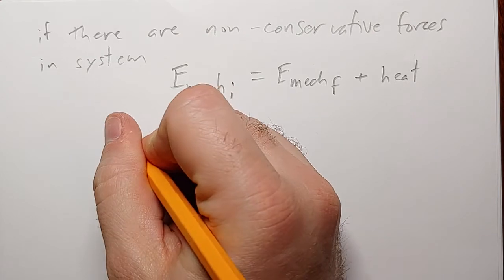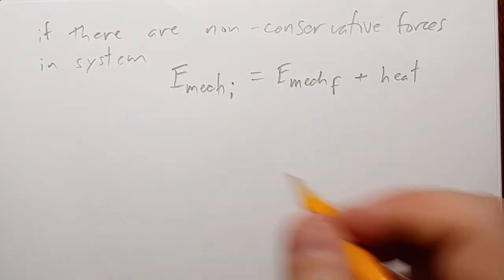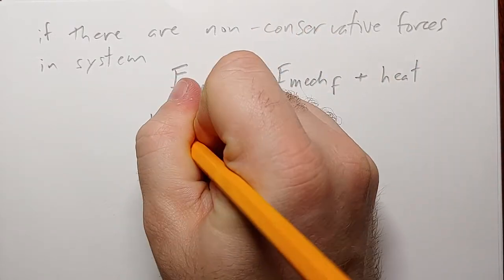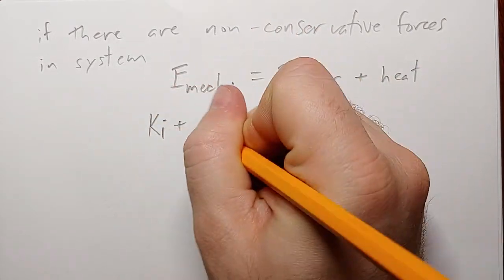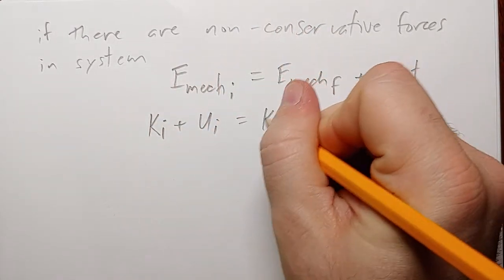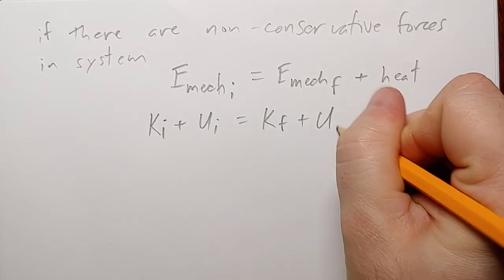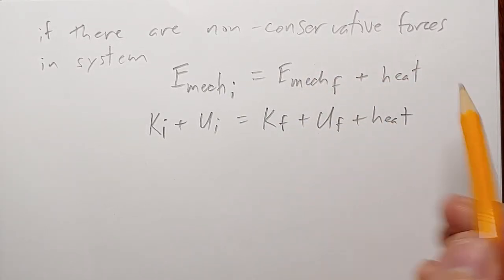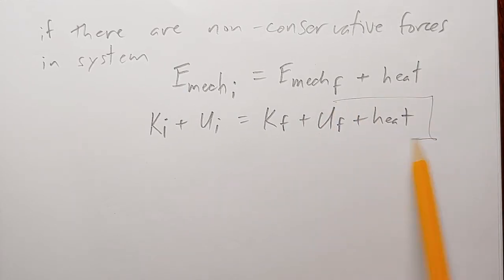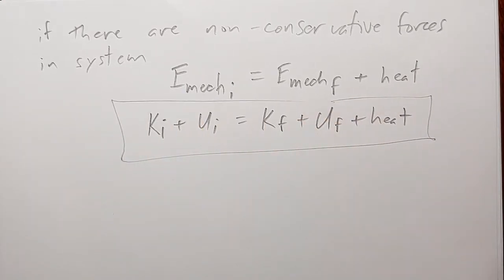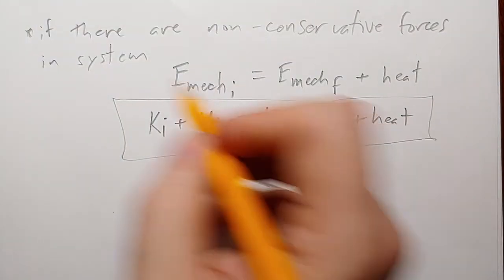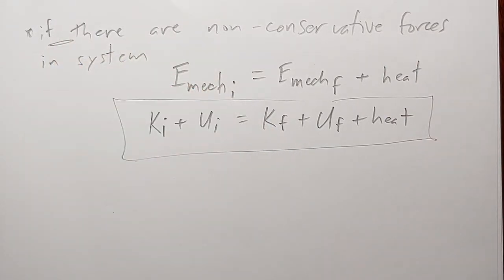So if we wrote this out completely — since mechanical energy is the total of your kinetic and potential energy — we get: Ki + Ui = Kf + Uf + heat. And again, this equation only applies when there are non-conservative forces present.